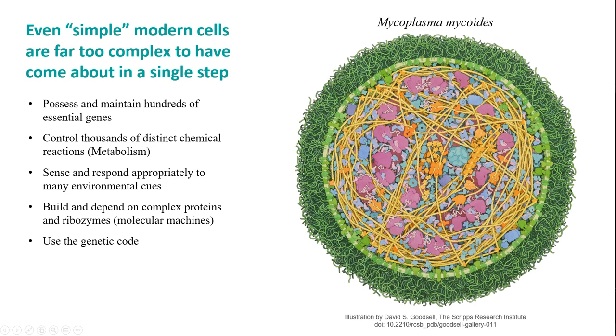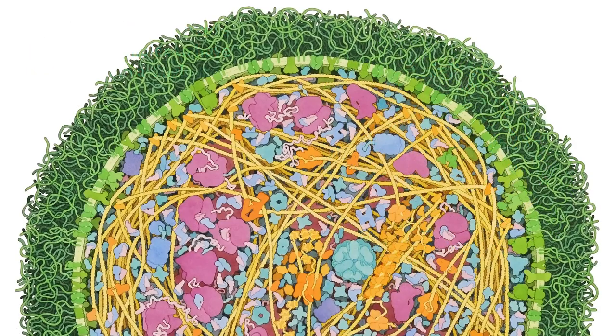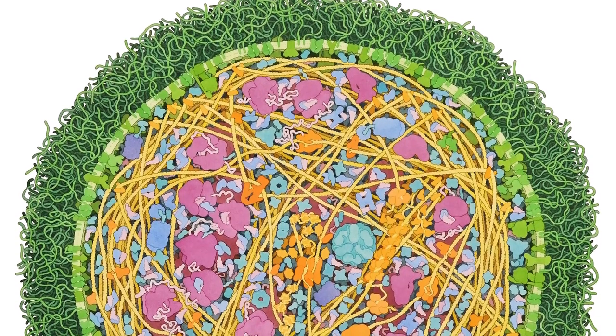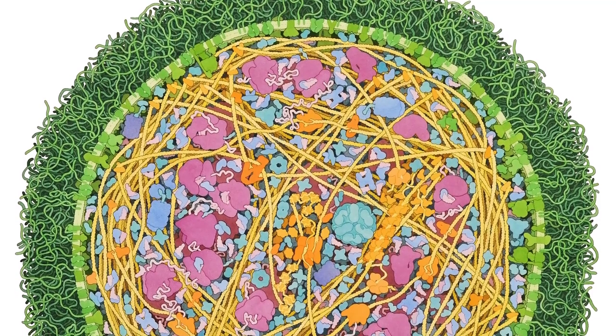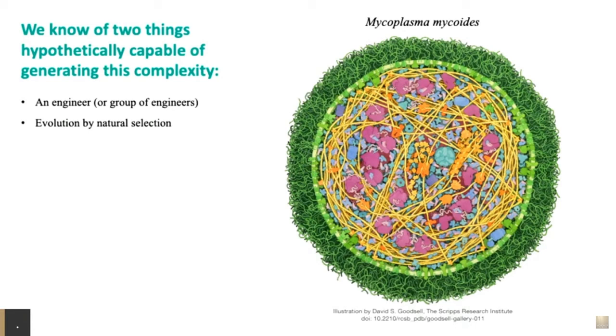If you look at a cell, so far as we can tell, everything is just a chemical system — it's physics and chemistry interacting in a very specific way. How do you get the more chaotic physics of the universe to form something this insanely complicated? These organisms possess and maintain hundreds of essential genes — an essential gene is one where if you knock it out, the whole cell will die. They control thousands of distinct chemical reactions in their metabolism, they sense and respond to many environmental cues, they build complex proteins and ribozymes, and they use the genetic code. We do know of two hypothetical processes capable of generating complexity like this: engineering by design, or evolution by natural selection.